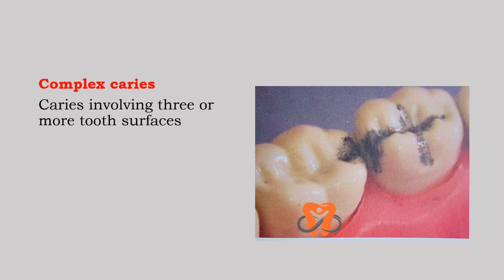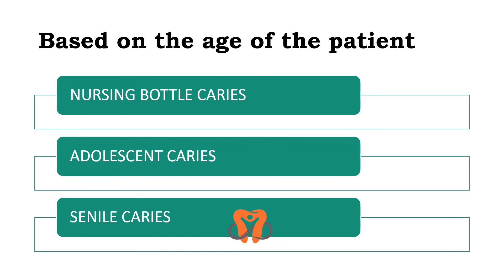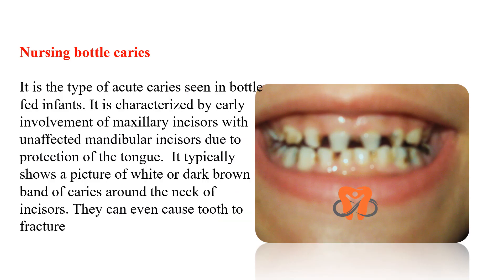Based on the age of the patient, we have nursing bottle caries, adolescent caries, and senile caries. Nursing bottle caries is a type of acute caries seen in bottle-fed infants. It is characterized by early involvement of the maxillary incisors with unaffected mandibular incisors due to the protection of the tongue. It typically shows white or dark brown bands of caries around the neck of the incisors and can even cause fracture of teeth.